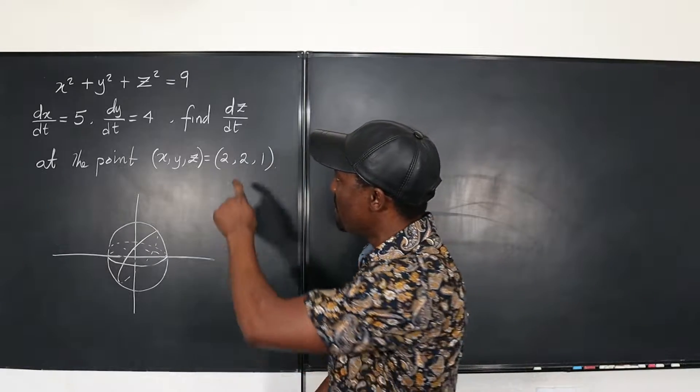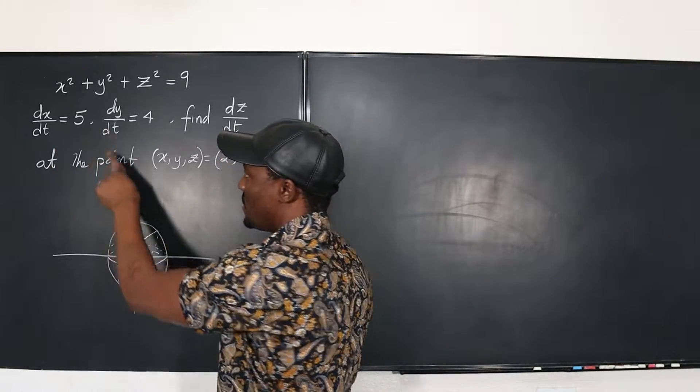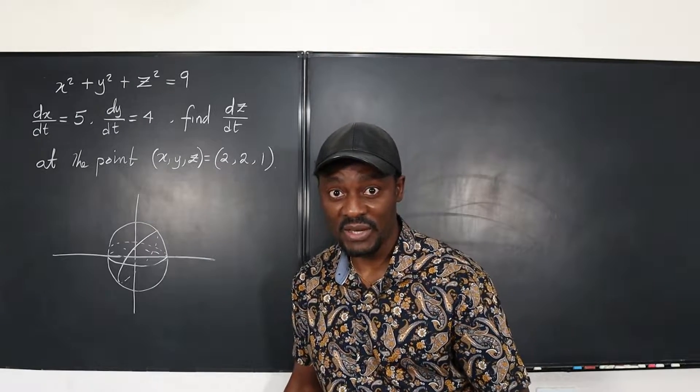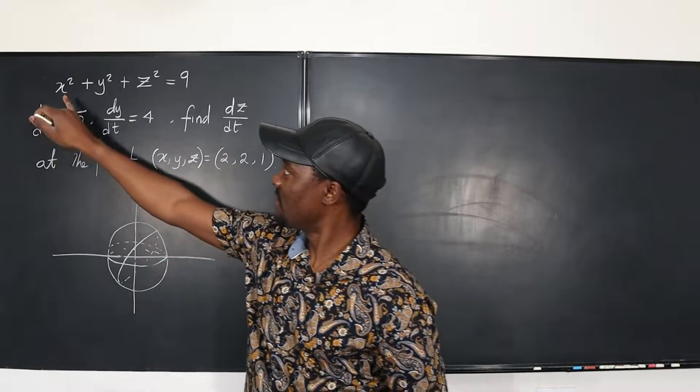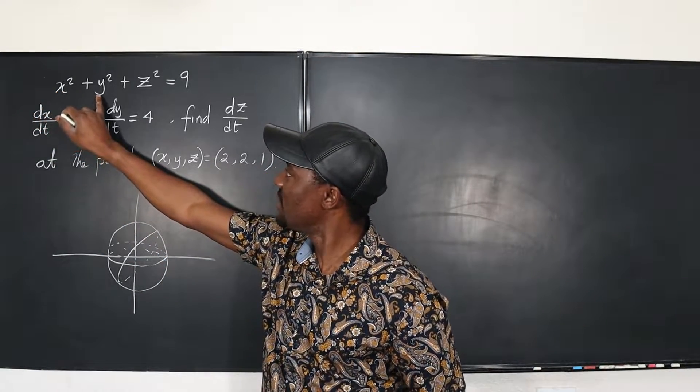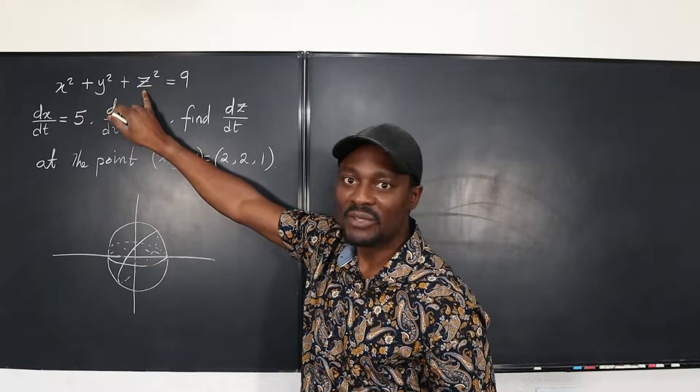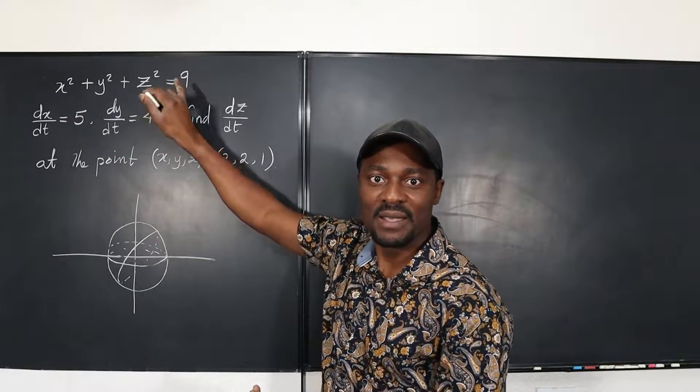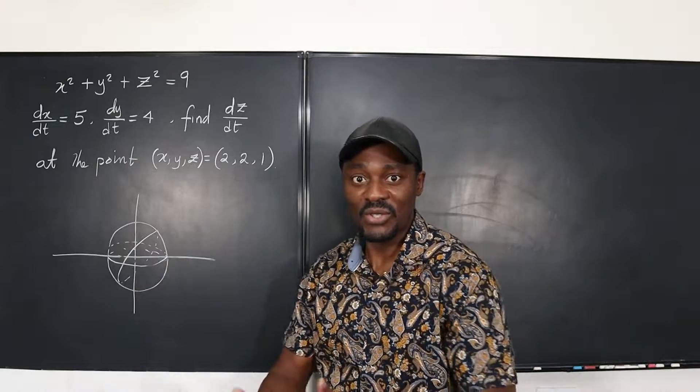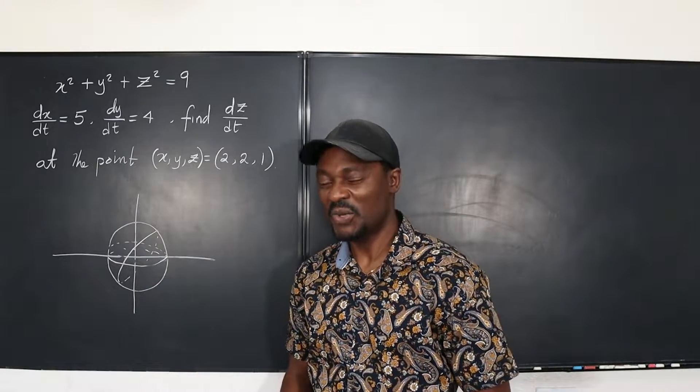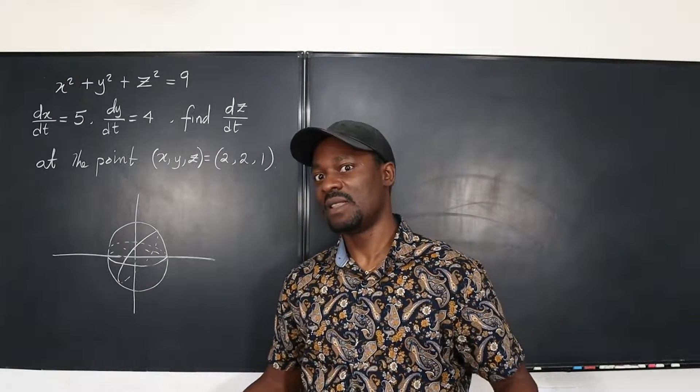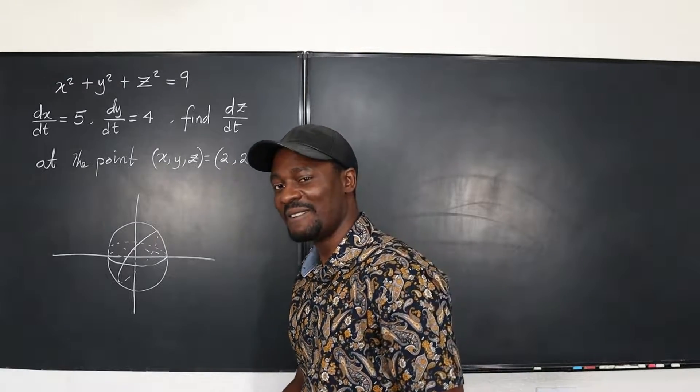X squared plus y squared plus z squared is always 9. But they're changing with time. So how do you get the derivative of the third one if all they gave you is this? Well, it's implicit differentiation. Just differentiate this with respect to t, differentiate this with respect to t, this with respect to t, and this with respect to t. And whatever you get, you just solve the equation. So let's do this. It's going to be a short video. I think the explanation is longer than the calculation.